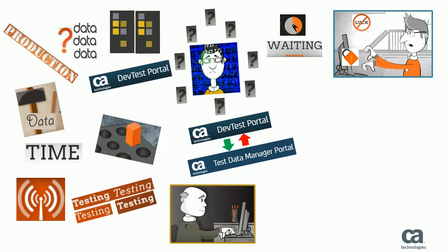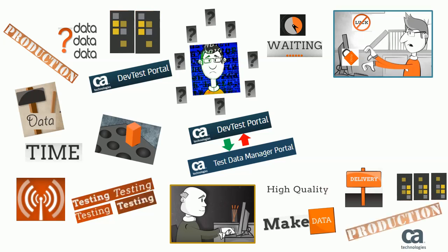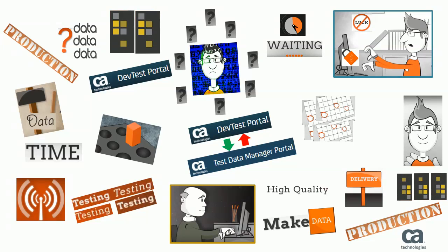That's where the integration between CA Service Virtualization and the CA TDM portal helps you address such issues. You simply generate and then push the generated request-response into a running virtual service, routing your application to the virtual service so that you can test without being blocked by restricted access.